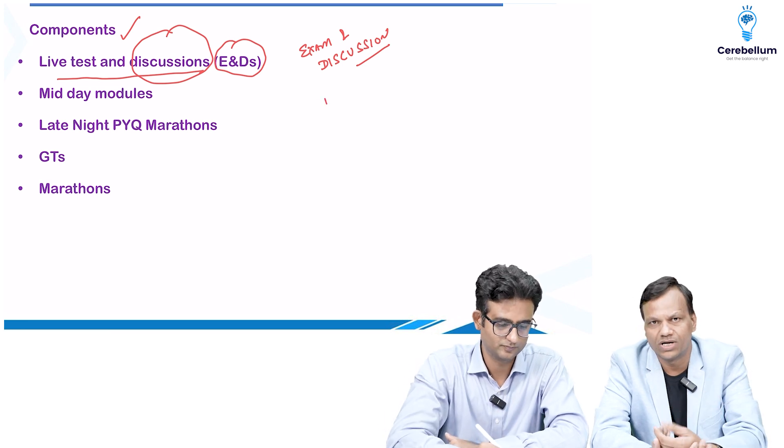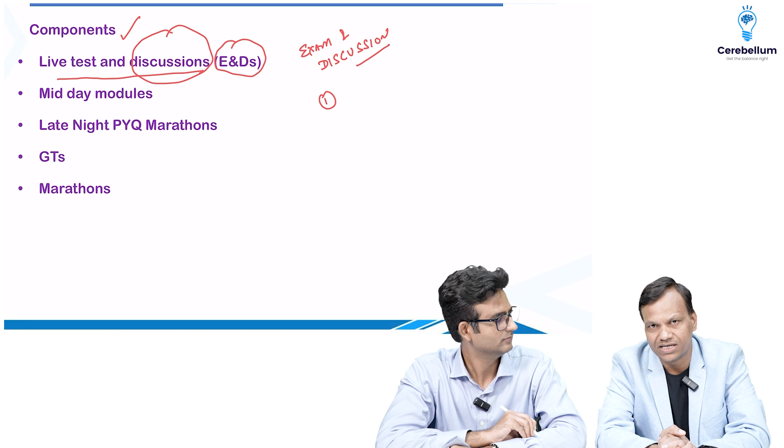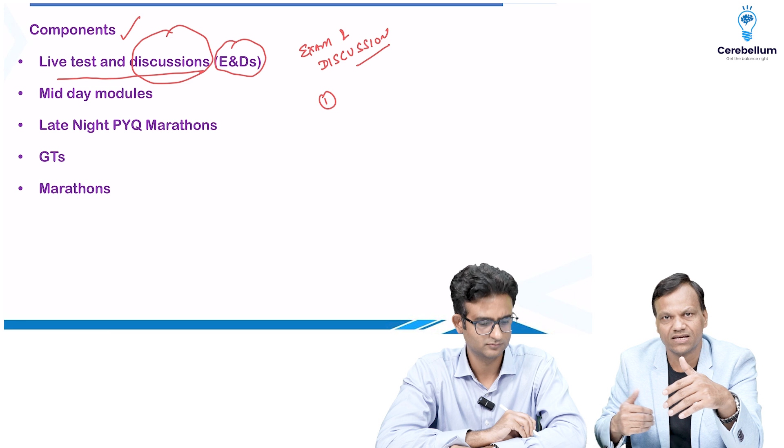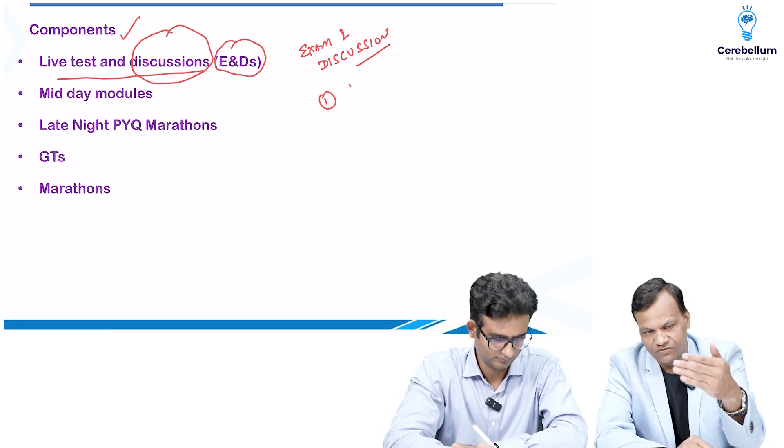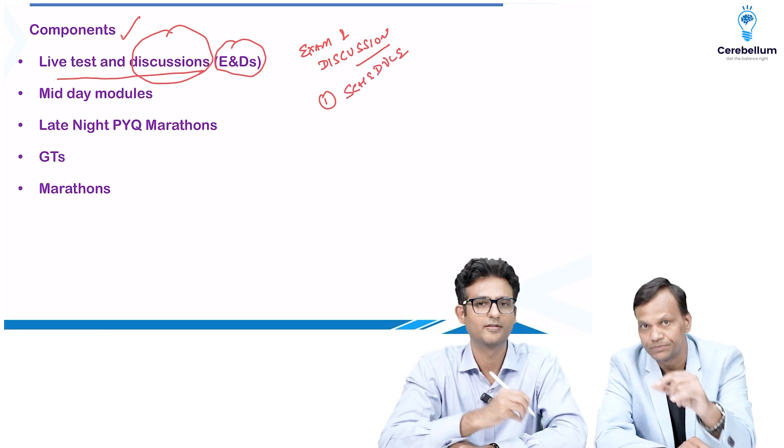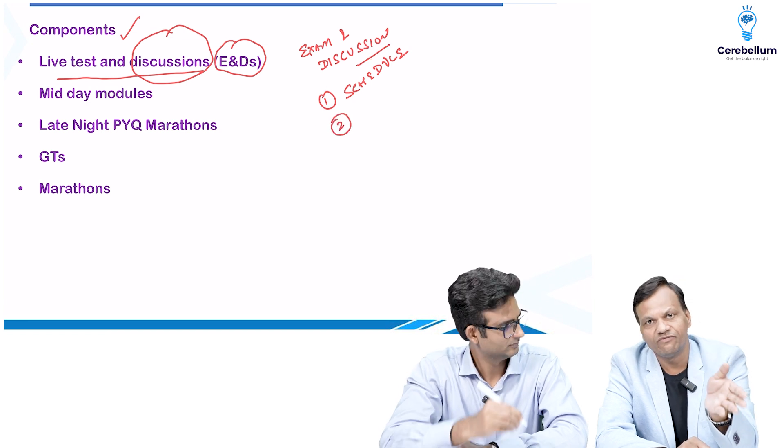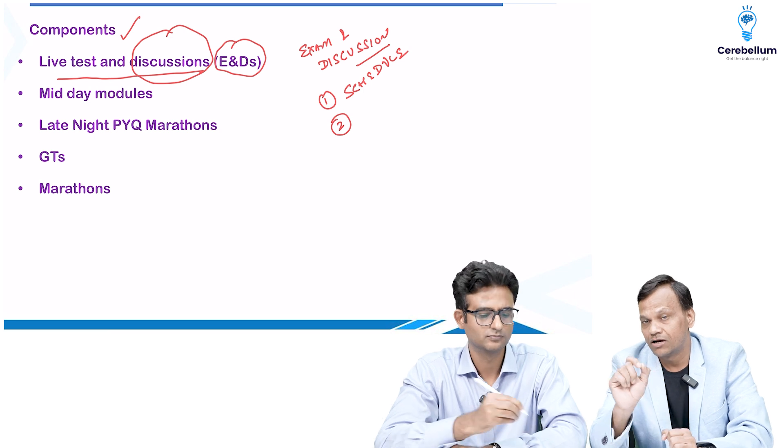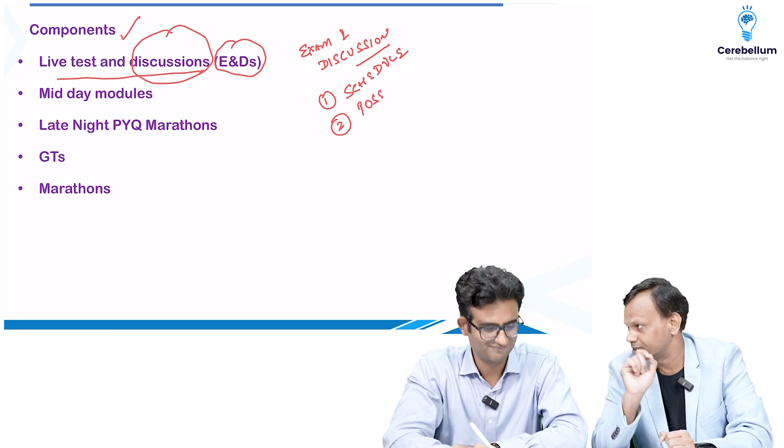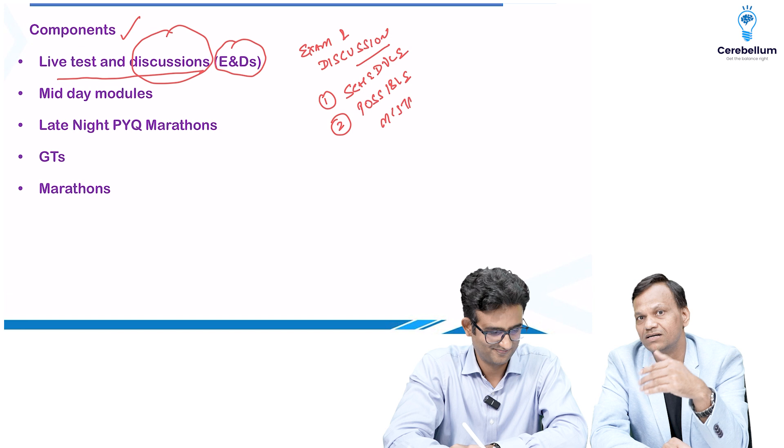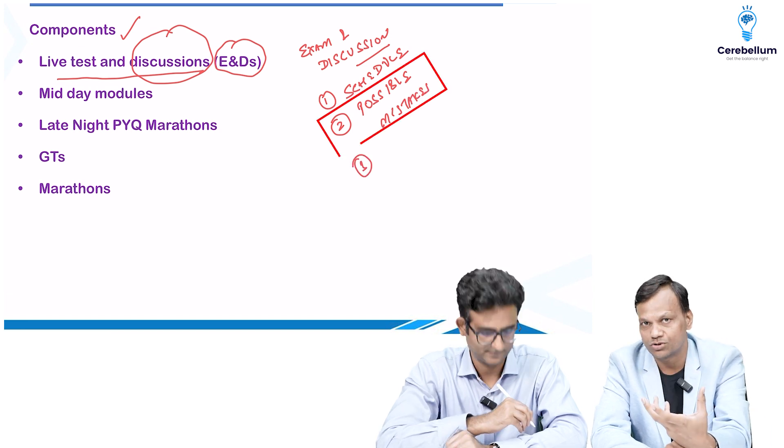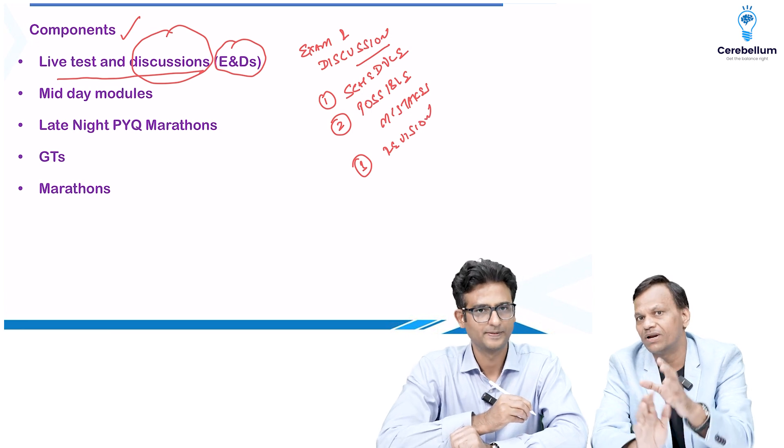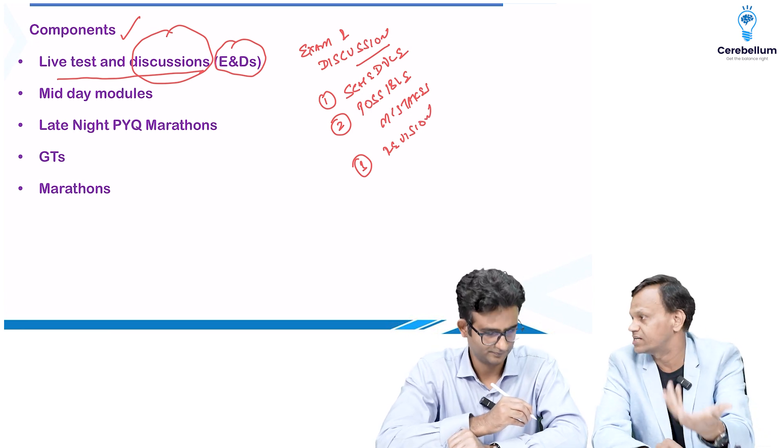Basically E&Ds stand for examination and discussion. This is an altered form of test and discussion. What happens is the student is given a test, subject-wise test or maybe some combined subject test and then the teachers will discuss. The subject-specific teachers will discuss these tests. The most important advantage as I talked to many students who got a good rank, they tell that number one, because it is subject-specific test, they get a schedule.